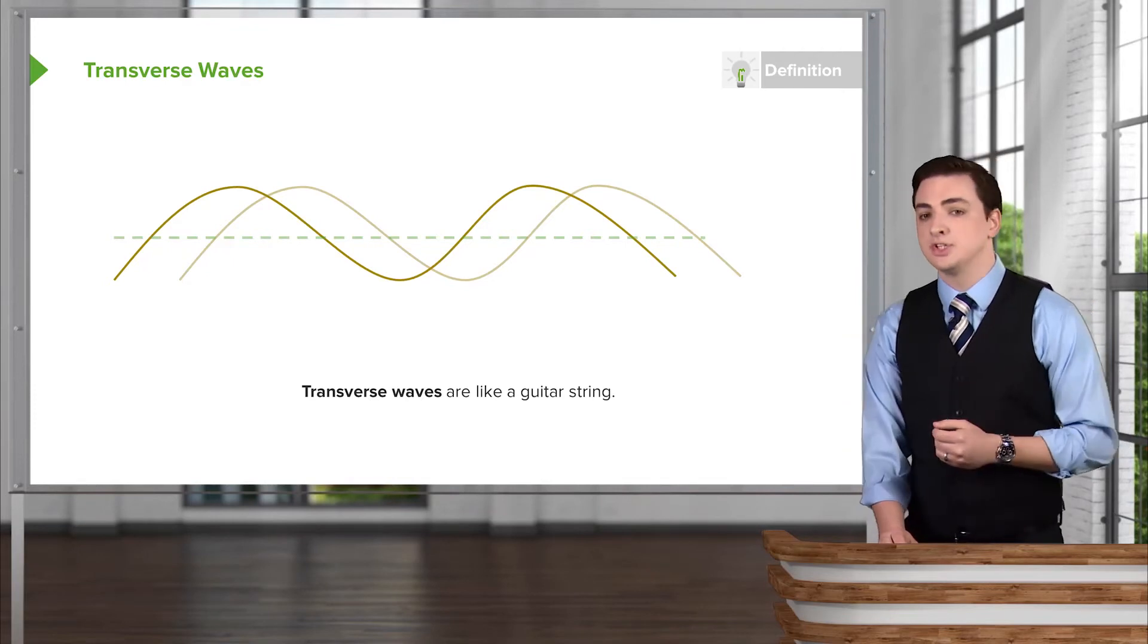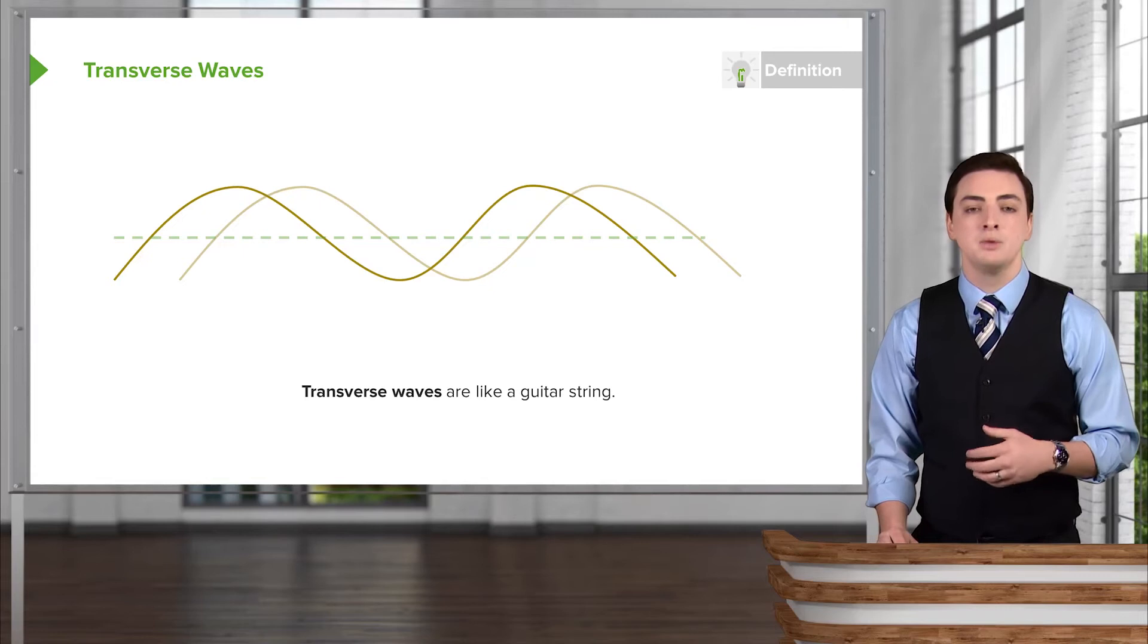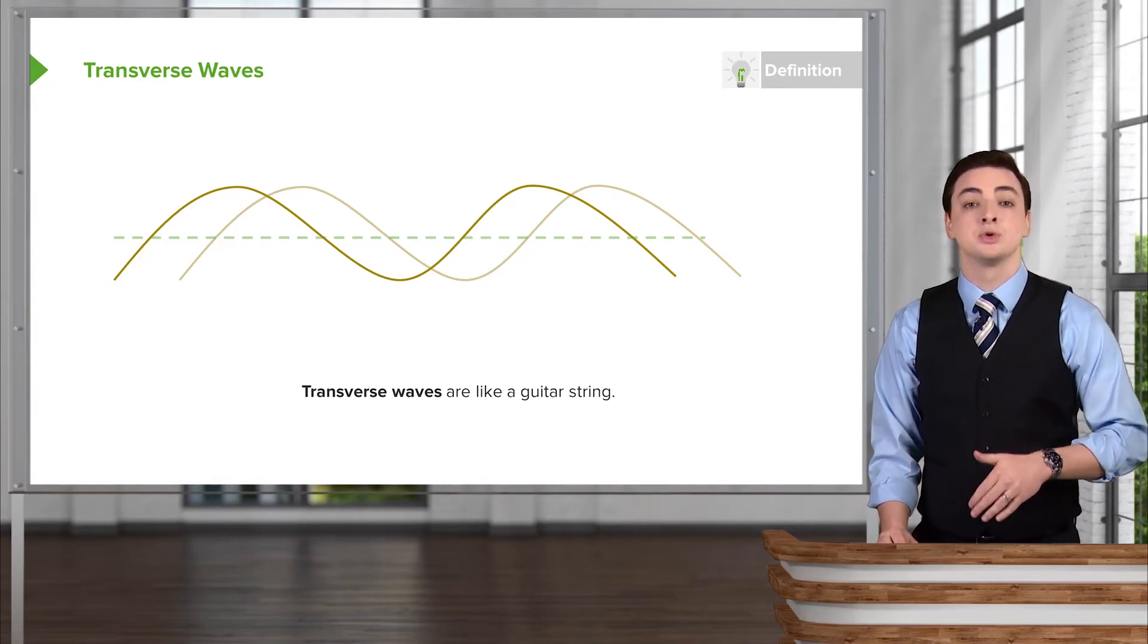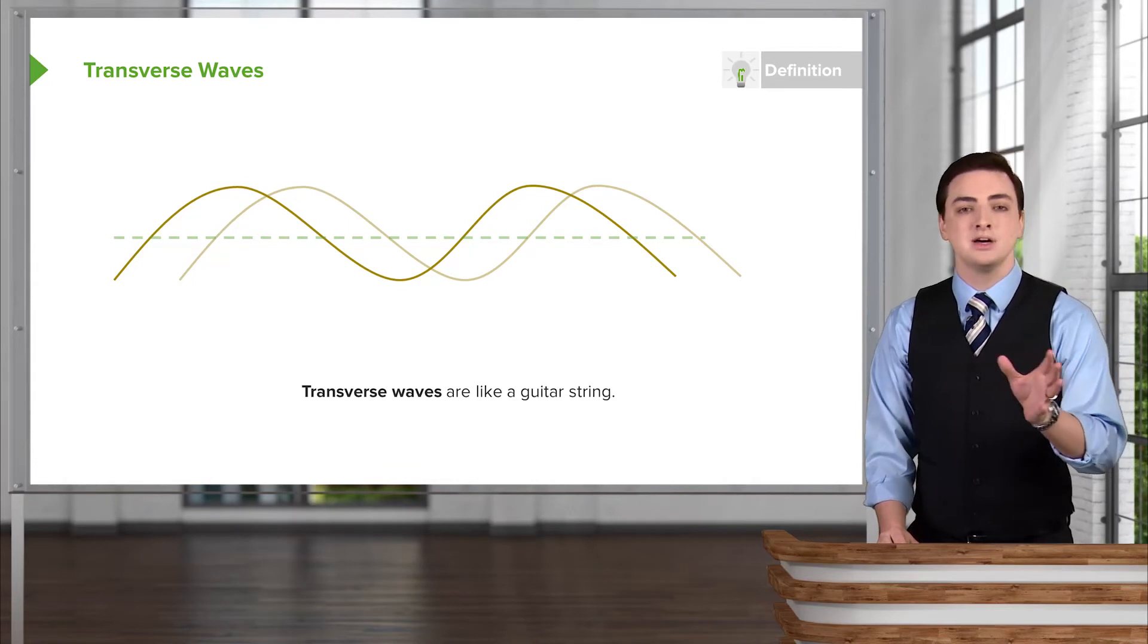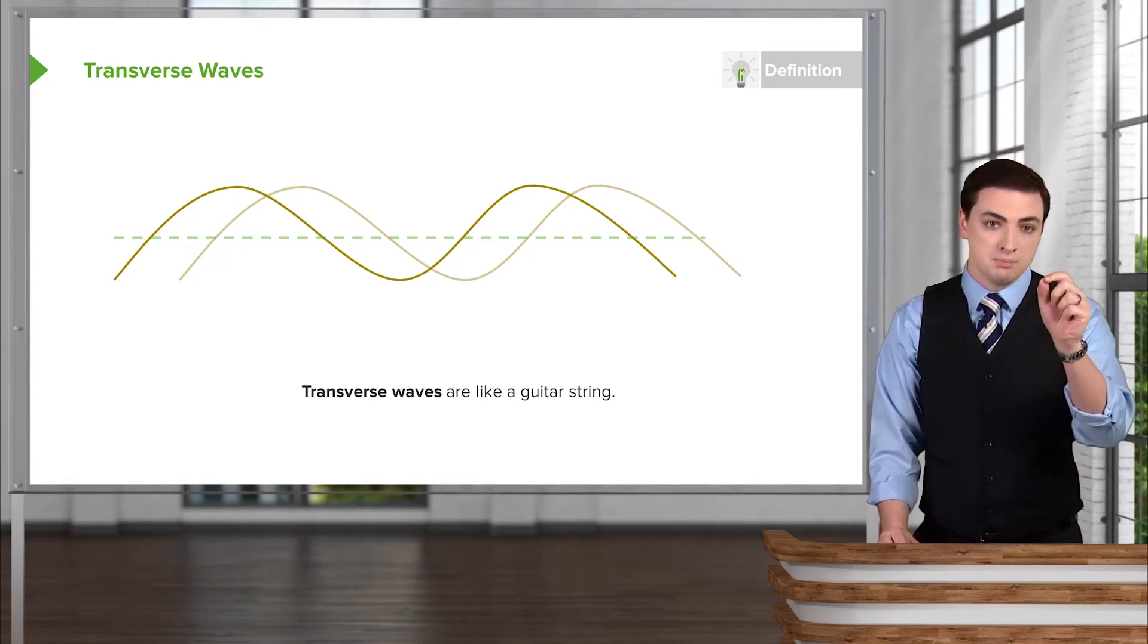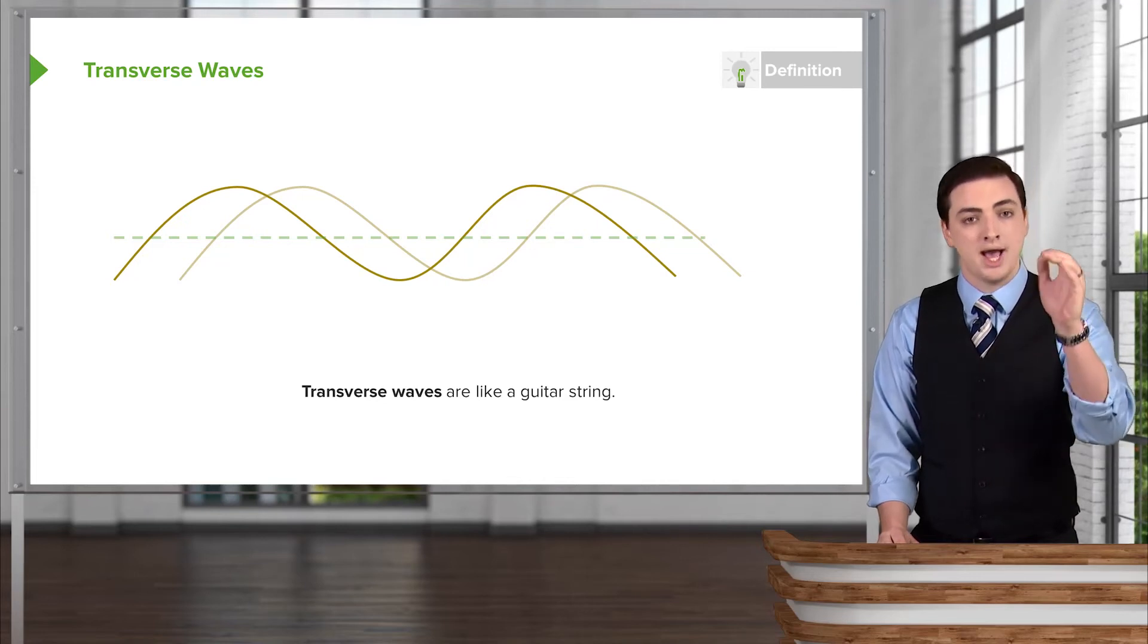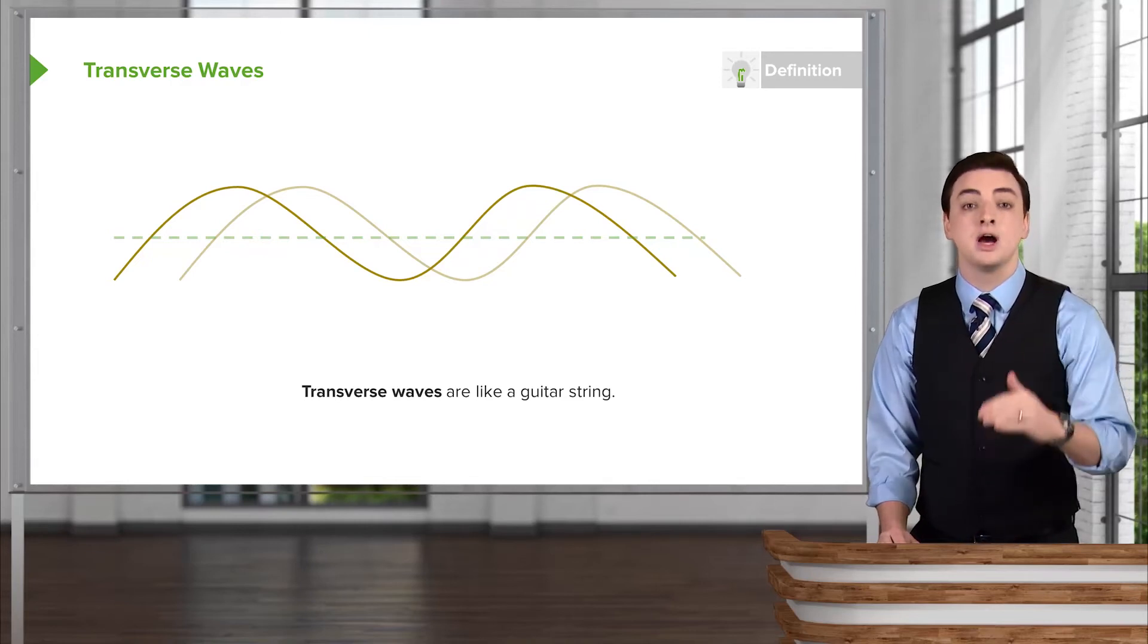The guitar string, as we've just introduced here, is what we would call a transverse wave. And we call it transverse because the direction of the oscillations are up and down, whereas the wave itself, if you were watching it on the guitar string, would be moving from left to right. If you picked one crest of the wave, one high point, and followed it across, you would see it moving left to right, whereas any point on the wave is moving up and down.